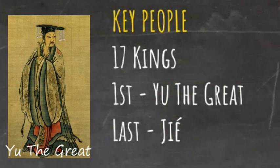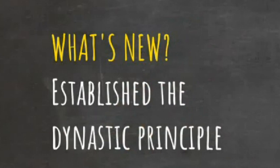In his book Historical Memories, Simachian said that the Shia had 17 kings, the first of whom was Yu the Great and the last was Xie. What we know for sure is that they established a dynastic principle in China, a template for the next 4,000 years of Chinese history. Simachian tells us that it was King Jia's tyrannical rule that led to his and his dynasty's overthrow.